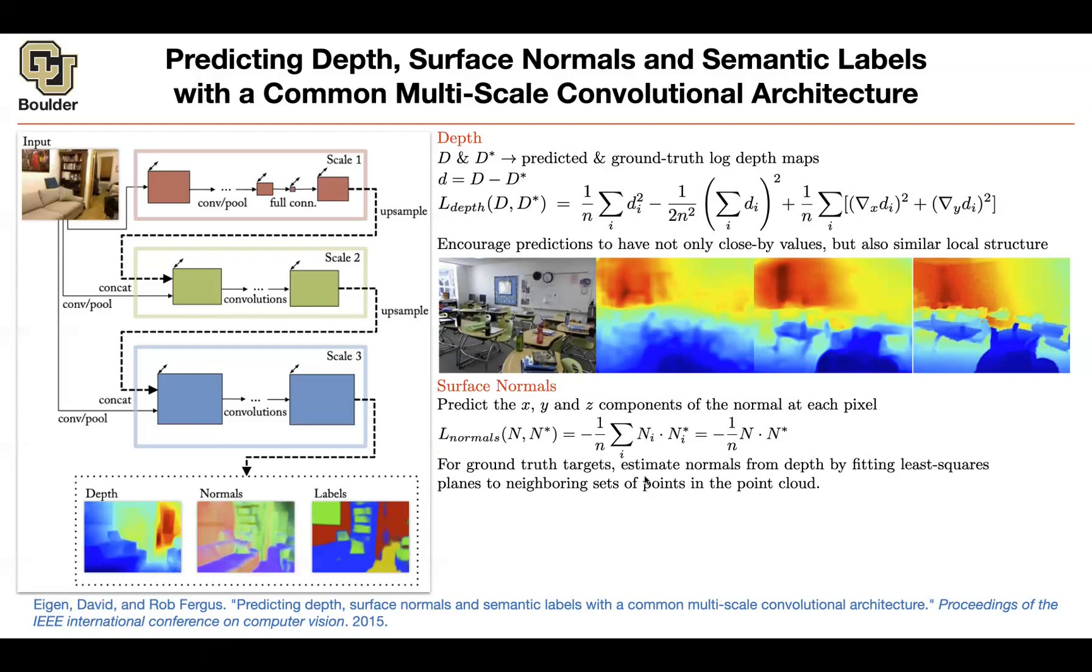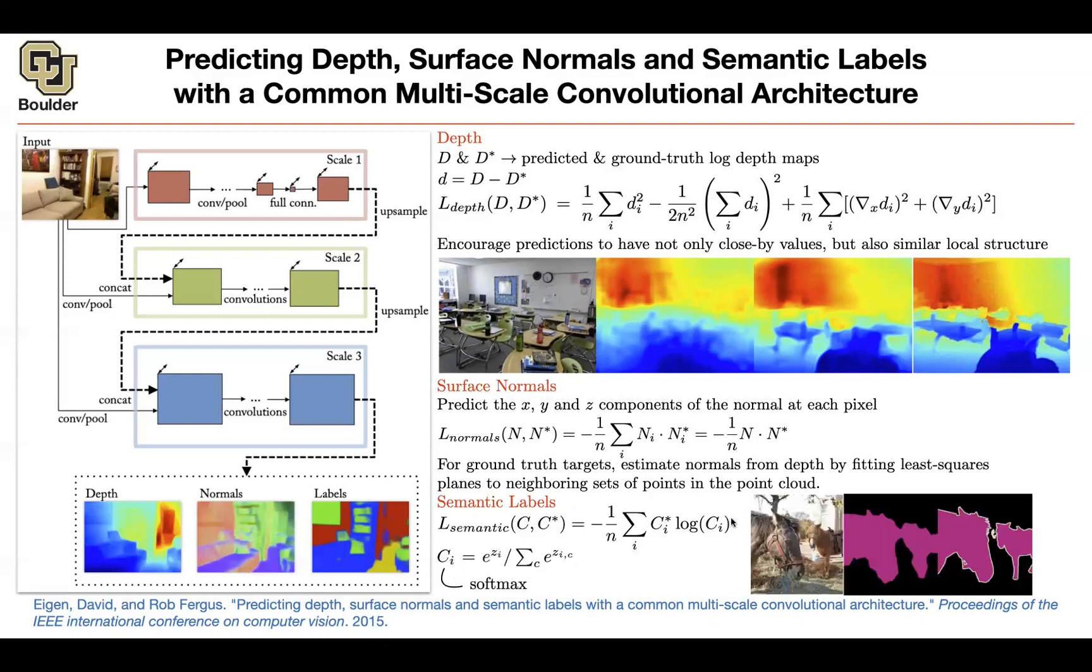There are actually methods that try to fit the least-squares estimate to the normals in the neighborhood of a set of points. So getting the ground truth is not that trivial and it's coming out of differentiating your depth estimations. For semantic labels, your loss function changes. This is your per-pixel cross-entropy loss.